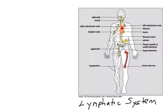I want to briefly introduce the lymphatic system now, even though the main focus — what goes on there with B cells and T cells being activated — won't be covered until units 2 and 3. The lymphatic system is a system of organs and tissues that allows lymphocytes to engage with pathogens and activate.